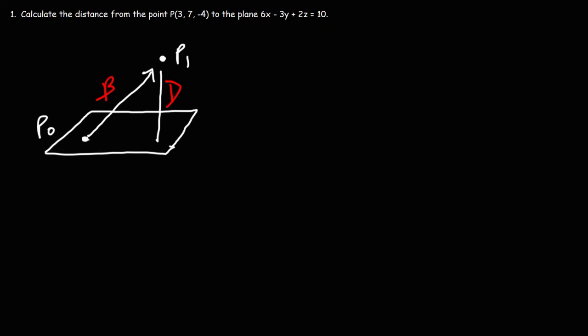Now, let's turn this into a right triangle. Theta is going to be the angle between B and D. So with this information, how can we find D?